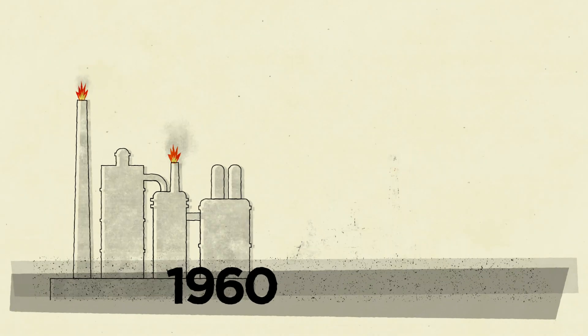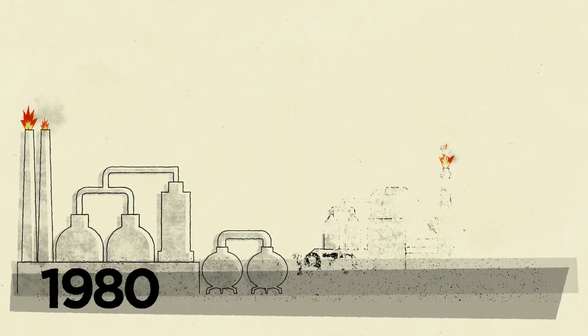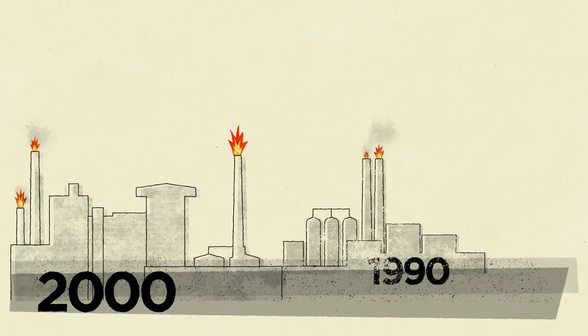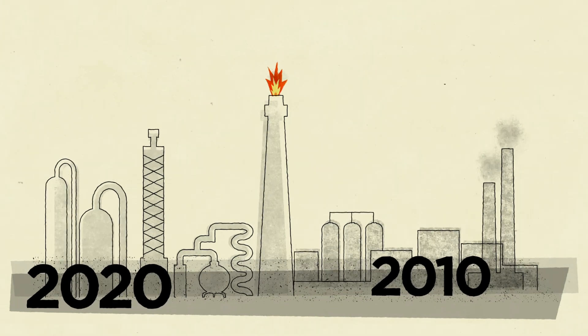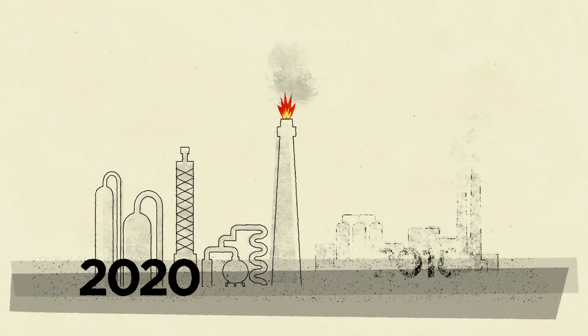1. Chemical recycling is the latest in a long series of failed technologies to address the plastic waste crisis. Despite decades of promises and development, commercial or large-scale operations are rare.